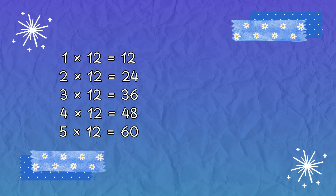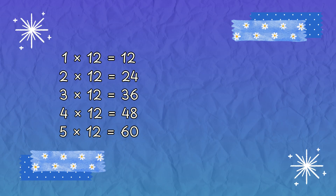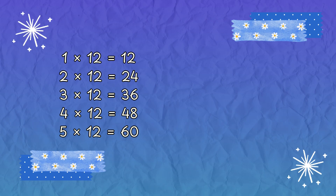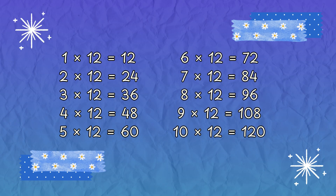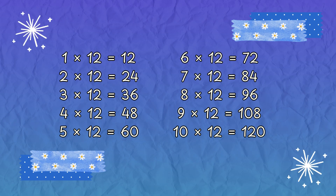1 x 12 is 12, 2 x 12 is 24, 3 x 12 is 36, 4 x 12 is 48, 5 x 12 is 60, 6 x 12 is 72, 7 x 12 is 84, 8 x 12 is 96.